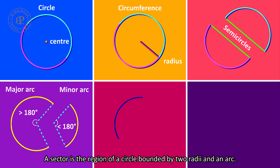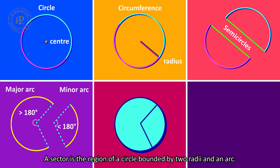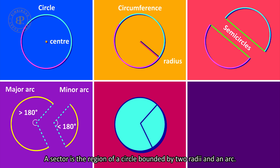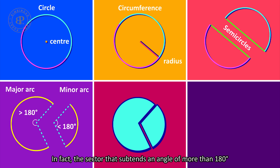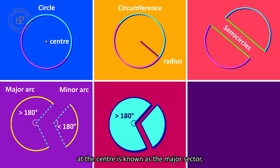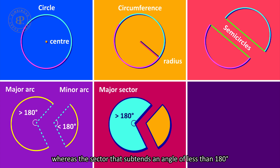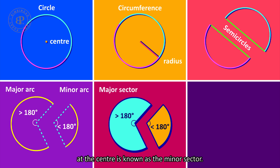A sector is the region of a circle bounded by two radii and an arc. The sector that subtends an angle of less than 180 degrees at the center is known as the minor sector.